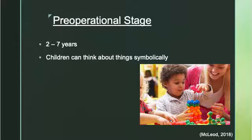The pre-operational stage develops in ages 2 to 7. During this stage, young children can think about things symbolically. This is the ability to make one thing — a word or an object — stand for something other than itself.